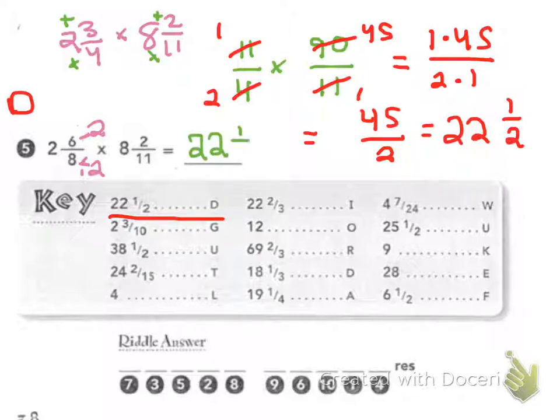And you can watch some of the videos of converting improper fractions into mixed numbers if you guys are confused as to how it got from 45 over 2 into 22 and one half. That is it for question number 5.